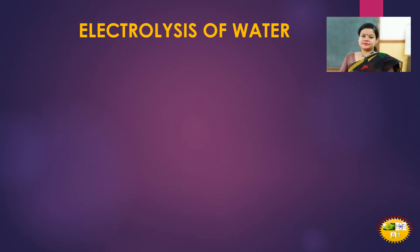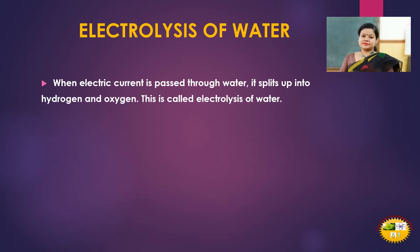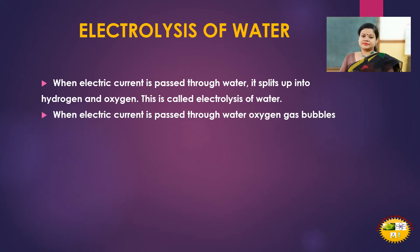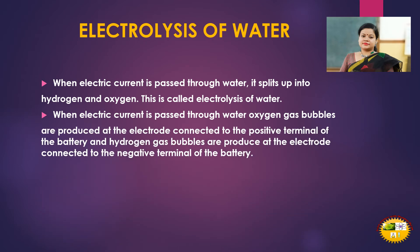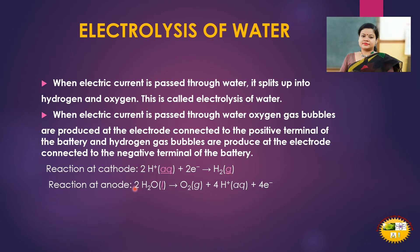Now we will see electrolysis of water. When electric current is passed through water, it splits up into hydrogen and oxygen — this is called electrolysis of water. Oxygen gas bubbles are produced at the electrode connected to the positive terminal of the battery (anode), and hydrogen gas bubbles are produced at the electrode connected to the negative terminal (cathode). In the reactions: at cathode, 2H⁺ ions gain 2 electrons producing hydrogen gas (H₂); at anode, OH⁻ ions lose electrons producing oxygen gas (O₂). AQ denotes aqueous, G denotes gas, and L denotes liquid.